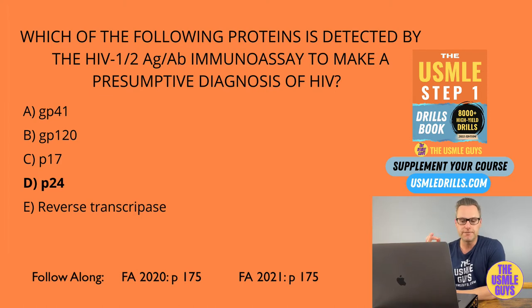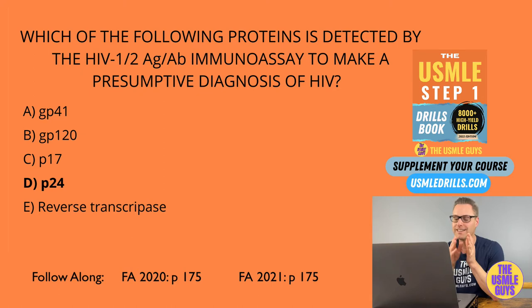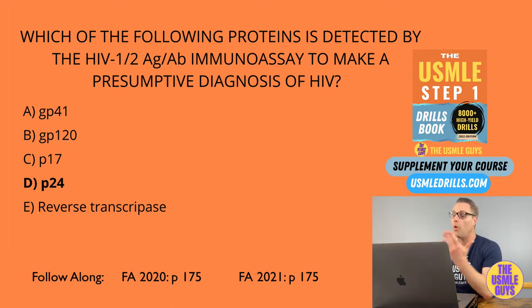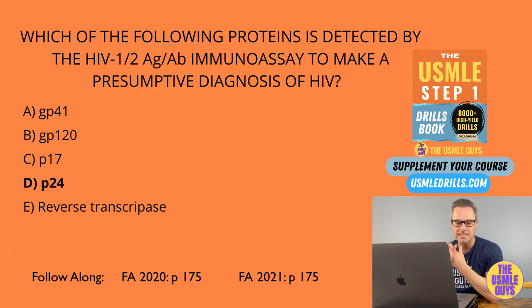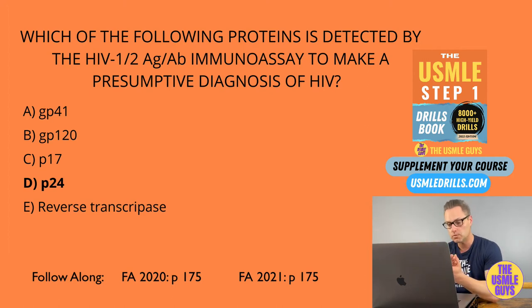HIV binds CD4 and either CCR5 on macrophages — which is a coreceptor — or CXCR4 on T cells. People can be either heterozygous or homozygous for a CCR5 mutation, which will either slow the disease or prevent it. If someone is heterozygous for the CCR5 mutation, the course of the disease will be slower. If they're homozygous, they're actually immune — so yes, you can be immune to HIV.